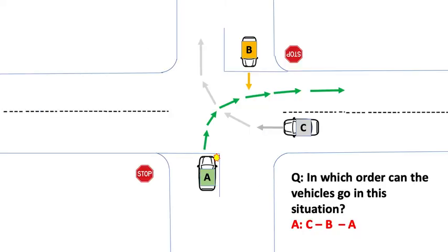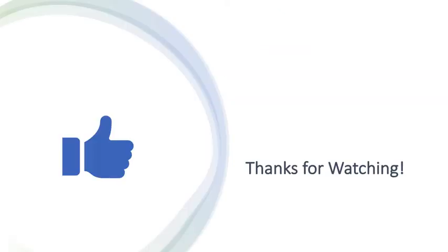Let's go back to our case study. In which order can the vehicles go in this situation? The answer is C, then B, and then A. Thanks for watching. This has been Brendan from Watto Training.